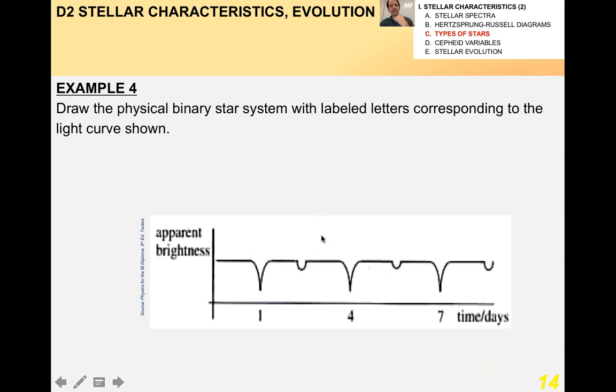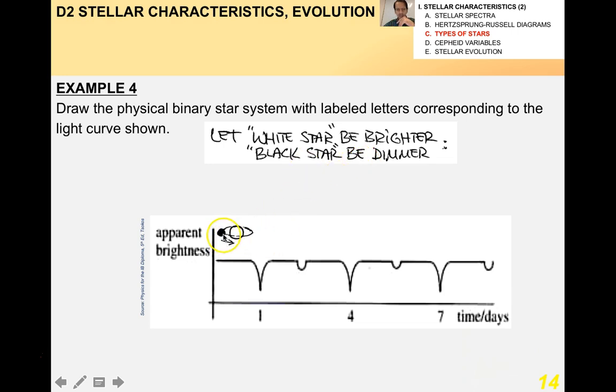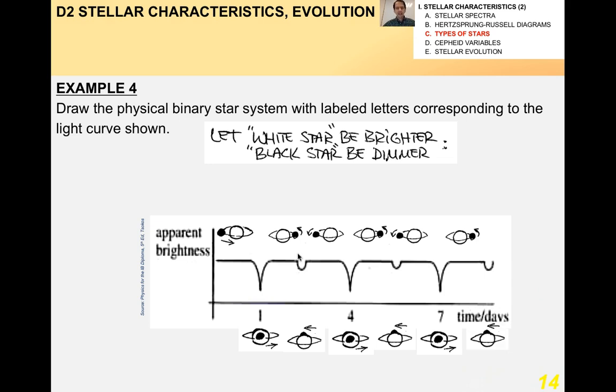Here's the one I wanted to spend a little time on, the apparent brightness against time. So you might be asked to draw the physical binary star system with labeled letters according to the light curve below. So I'm going to let, in my diagram, the white star be brighter and the black star be dimmer. Here's the dim star and the bright star. Notice that I have the highest apparent brightness when I can see them both, when one is not obscuring the other. The greater dip here is going to be when the dimmer star goes in front of the brighter star. That's going to be the greater dip. Then here, I can see them both right here. Right here, it must be that the brighter star is going in front of the dimmer star, because I have less of an apparent brightness dip and so forth, and that's how the pattern works. So you might be asked to do some sort of sketching like that on the IB exam.